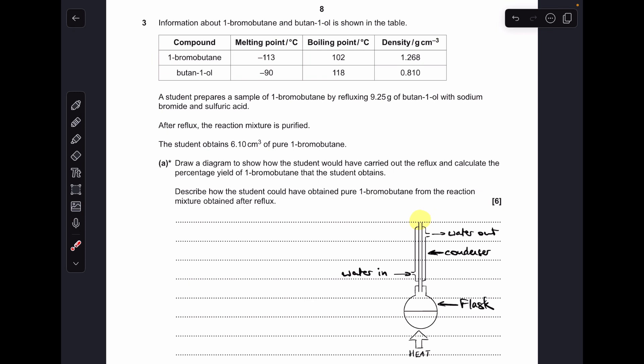So we'll do the percentage yield calculation next. So there's the equation for the reaction. I haven't asked for that but I'm going to talk about it in the calculation. The HBr has come from the mixture of sodium bromide and sulphuric acid. That's what's actually reacting with the alcohol.